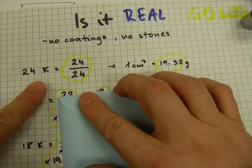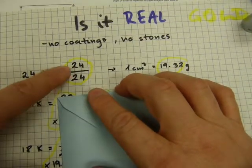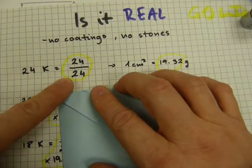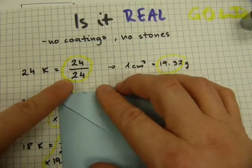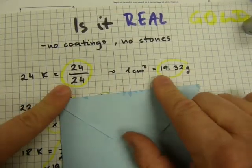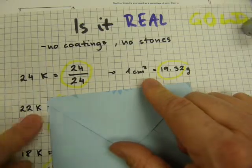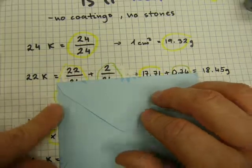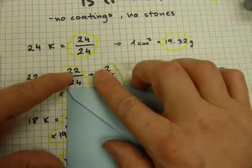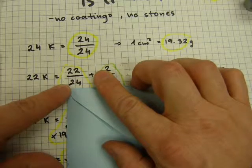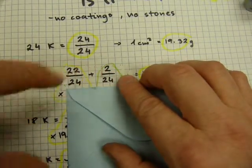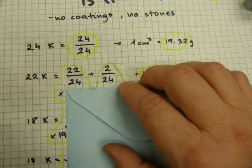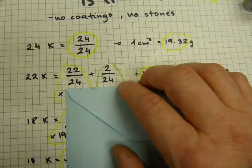And this is how stuff works. If something is 24 karat, that means that it contains 24 parts of gold out of 24 parts of product. So that means that every cubic centimeter of it is exactly 19.32 grams. If something is 22 karats, that means that it contains 22 parts gold out of the 24 parts, and it contains 2 parts of something out of the 24. Those two guys make up the 24, 24 out of 24.